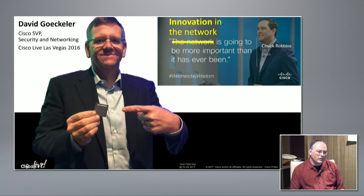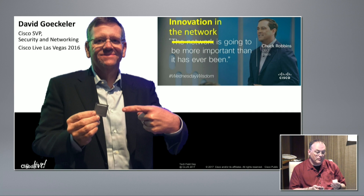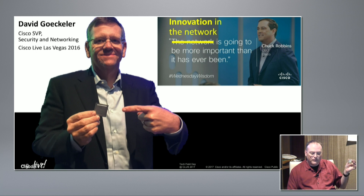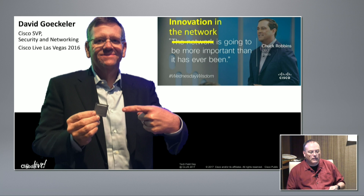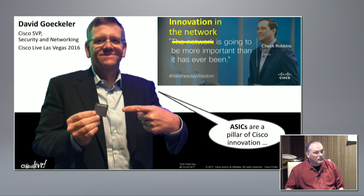You constantly see our senior leaders standing up on stage holding up an ASIC — a chip like this. The chip Dave Geckler is holding there is a UADP from the 3850 — a UADP 1.1, the heart of the 3850 switch. I also have one here that's the heart of the Cat9K switch, the next generation. Our executives constantly say ASICs are a pillar of Cisco innovation, and I think that's absolutely true. But what we really want to do is double-click into that and explain why, and explain some of the cool stuff we're doing with our chips.